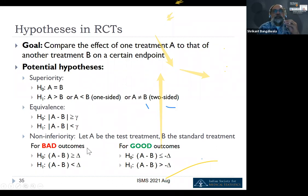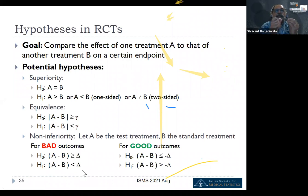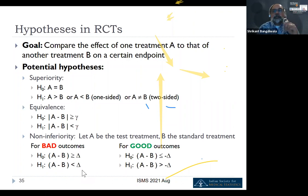For non-inferiority with a bad outcome, you want the difference between treatments to be less than another threshold — capital delta — established by a regulatory agency, meaning the difference is no bigger than that threshold. For a good outcome, it should not be worse than minus that threshold. We'll make this clearer shortly.